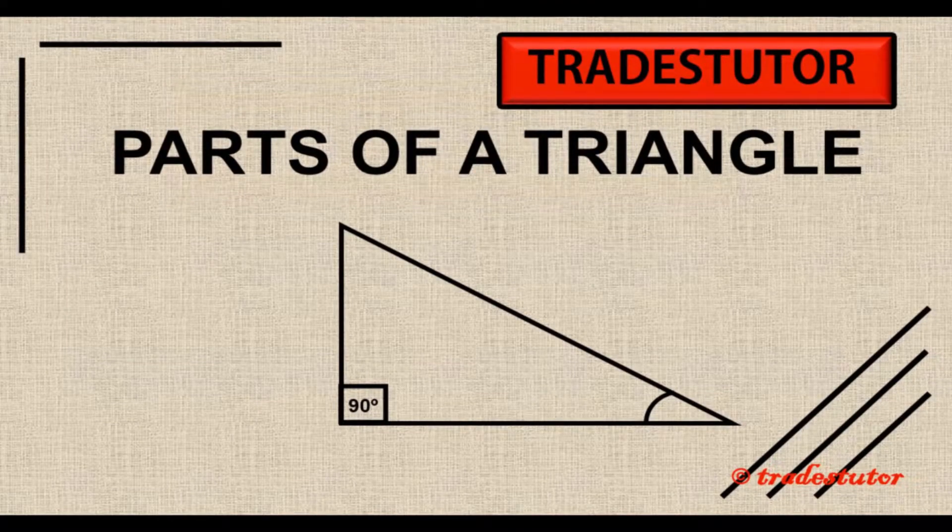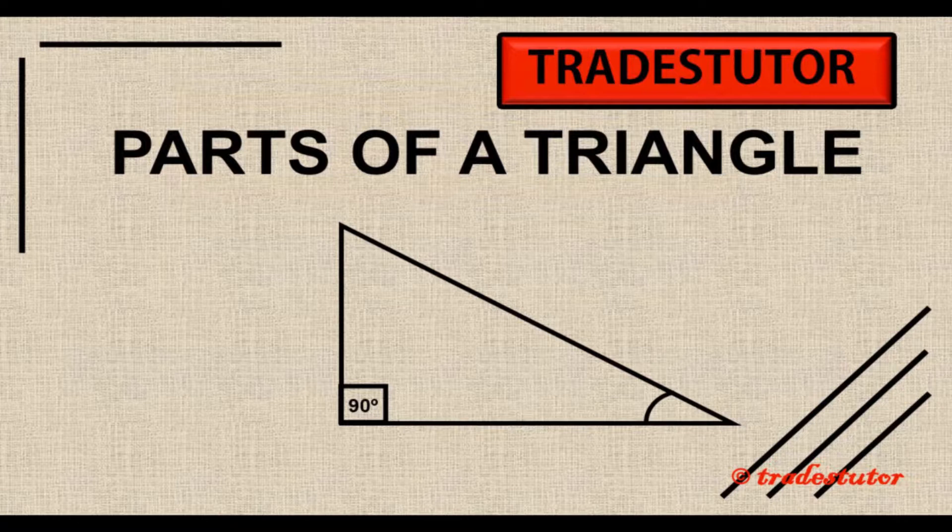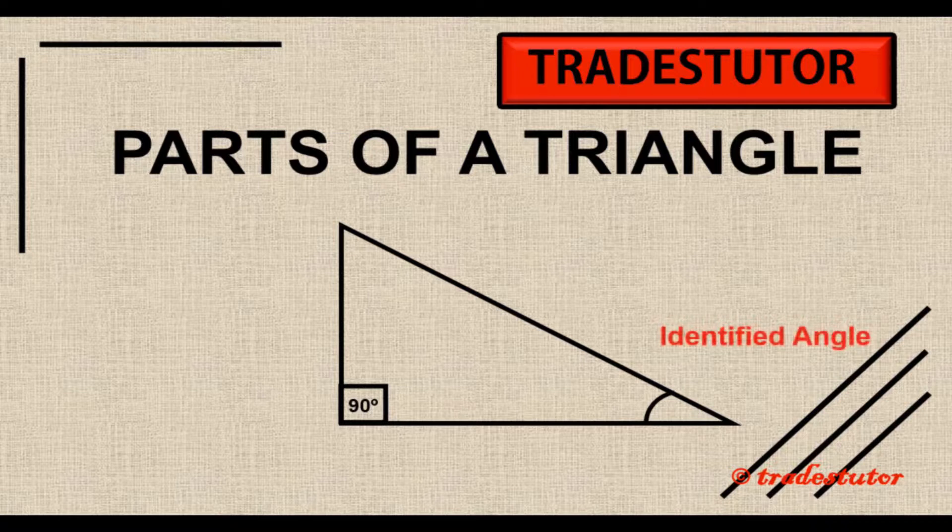First, we're going to start with the parts of a triangle. How we name them becomes important later on when looking at the relationship between the three sides. The thing to note on this drawing and on all the drawings we're going to do is it's a right triangle, which means one of the angles is 90 degrees. The other two angles also add up to 90 degrees, and the three of them together add up to 180. So what we first have to start with is what we call the identified angle, and you can see there that it's identified by the little circle in the corner showing you this is our starting point.